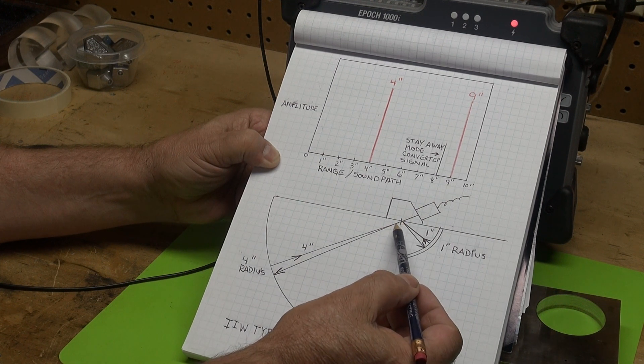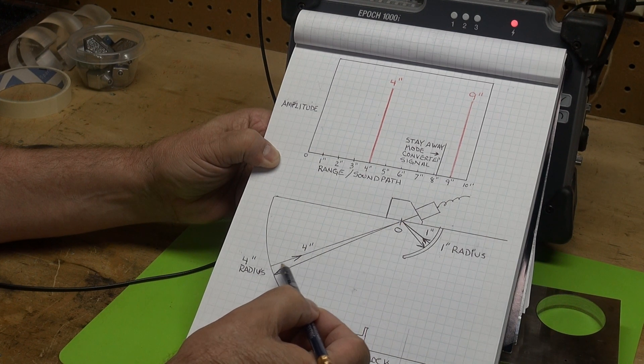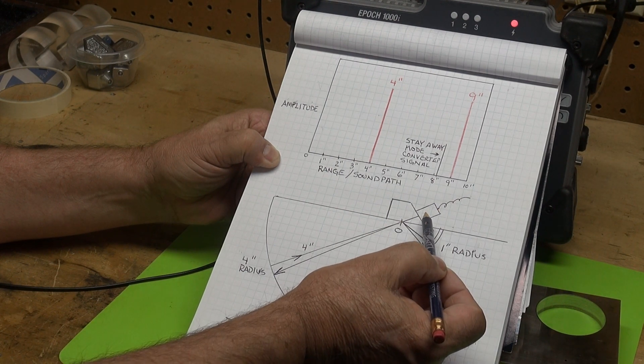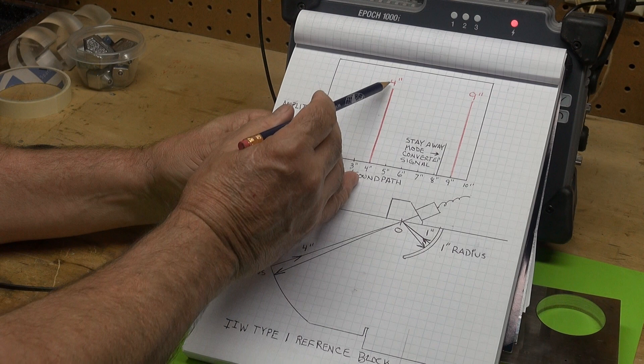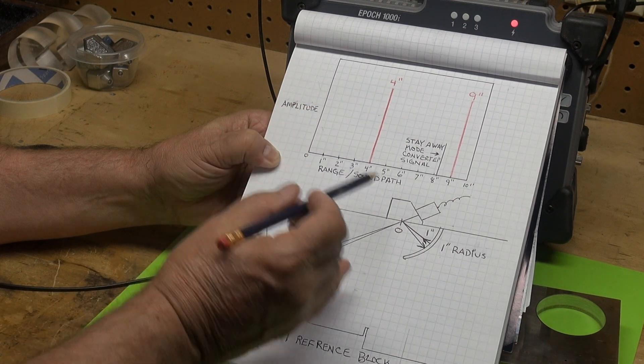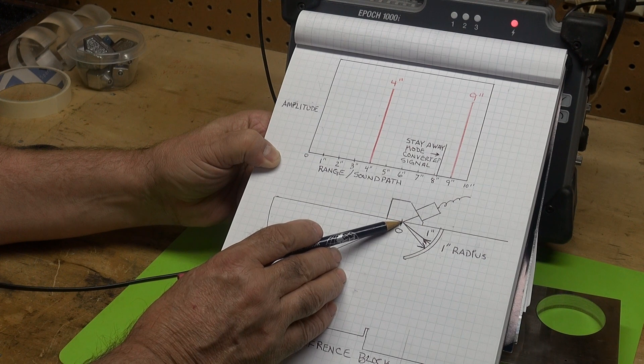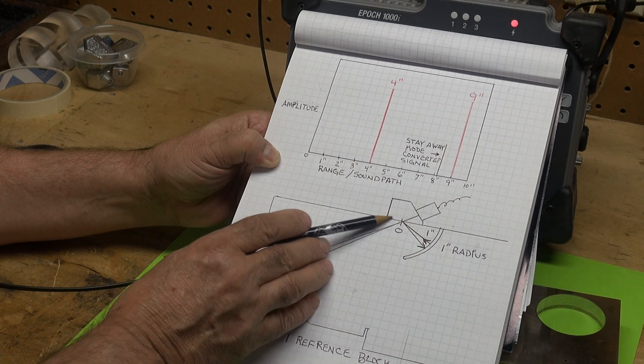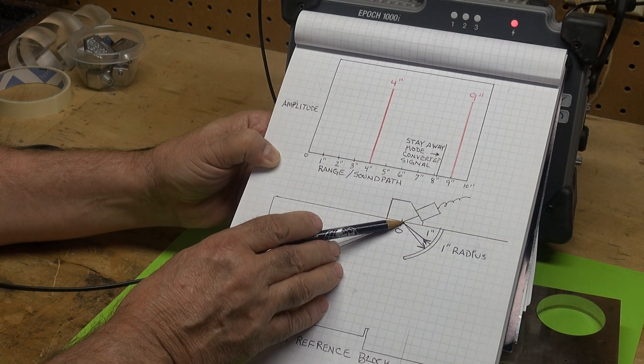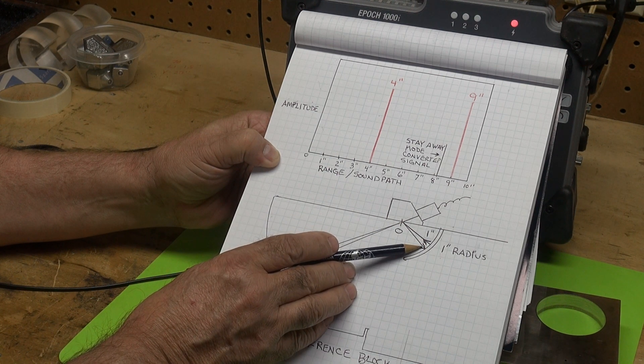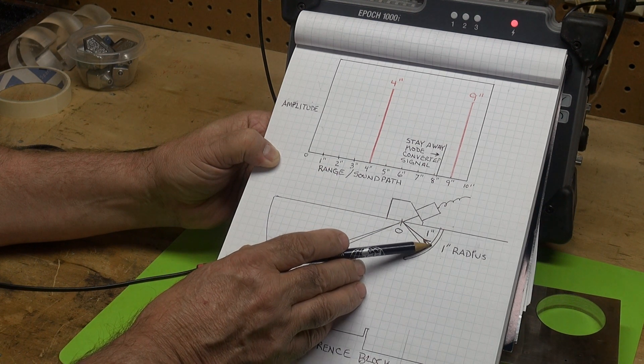So the sound comes out, strikes the 4 inch radius, bounces back perpendicular, strikes our transducer. We get a 4 inch pulse on our display. When that signal comes back it also deflects off the top surface of the block and comes down to strike that 1 inch radius.